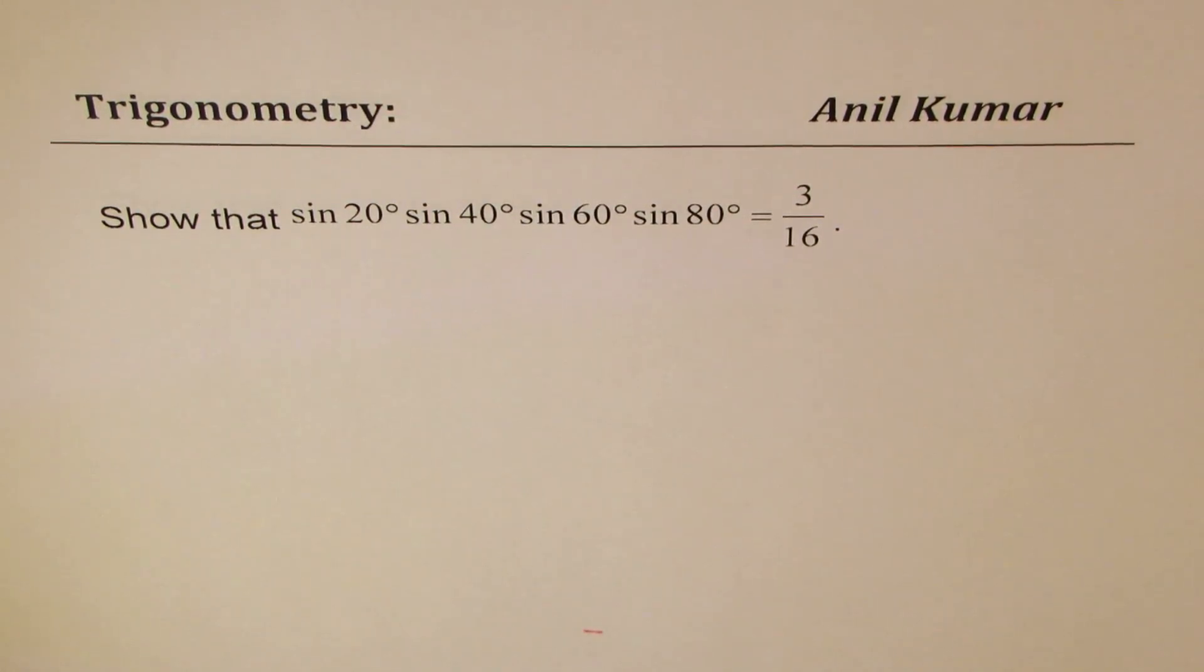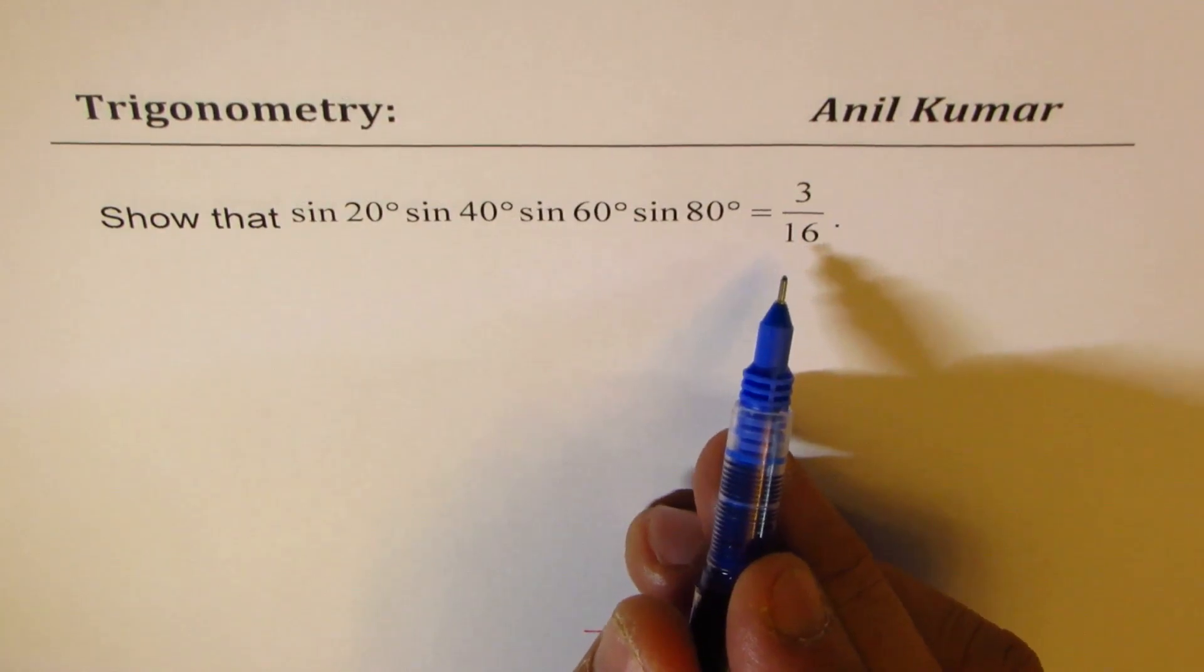The question here is, show that sin 20° sin 40° sin 60° sin 80° equals 3 over 16.